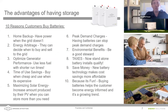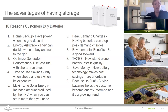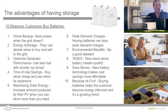Having batteries gives you more freedom. First, home backup — you want power when the grid doesn't. Solar alone won't give you backup power without batteries. Energy arbitrage lets you buy electricity when it's cheap and use or sell it when favorable. If you're generating excess solar, you can store it in batteries and discharge to the grid when rates are favorable, giving you flexibility in when you buy and sell.